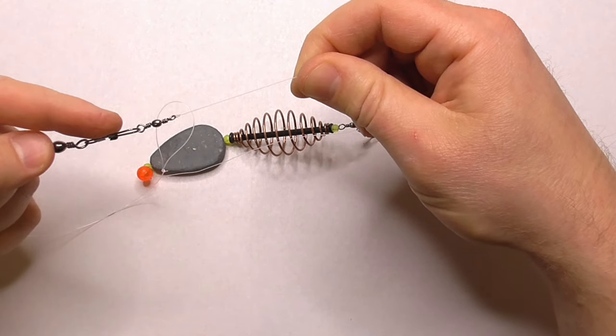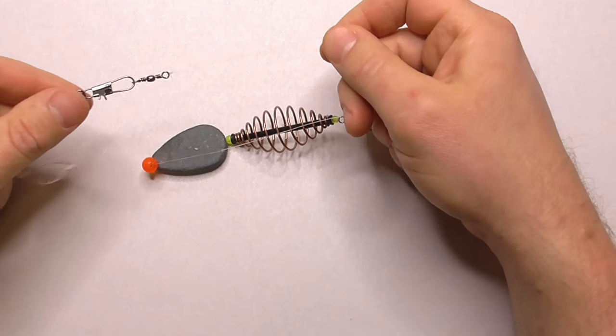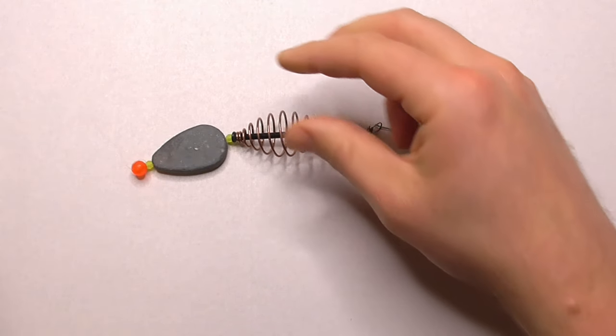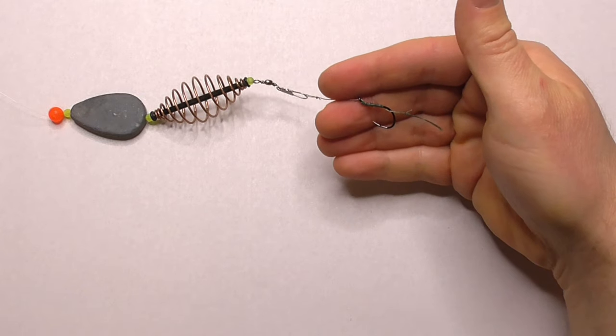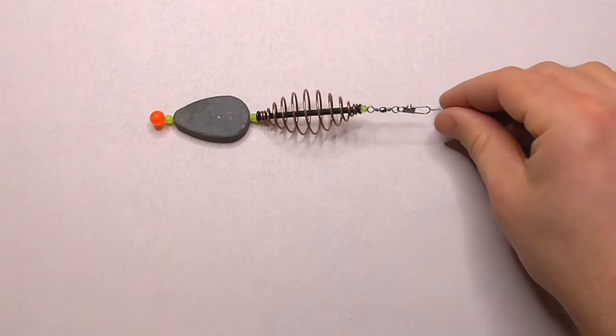So you've got a snap link at the top and a snap link at the bottom, I think that's pretty cool. You can totally change out those components real fast. You can have these pre-tied and just ready to go whenever you need to change. Pretty good idea I think.